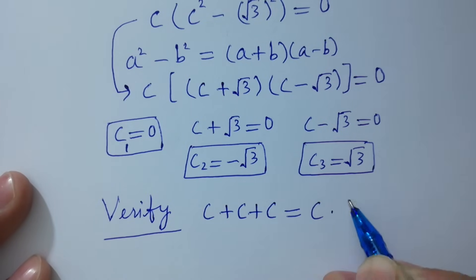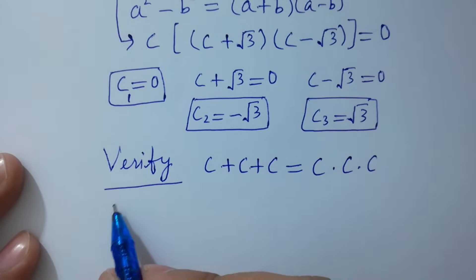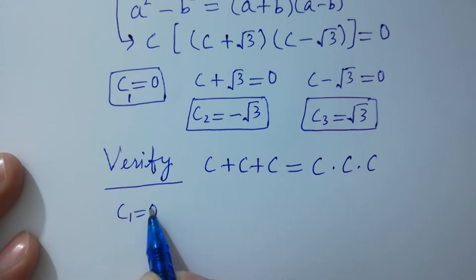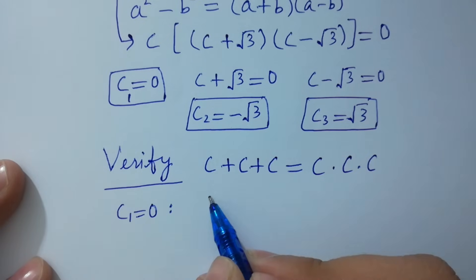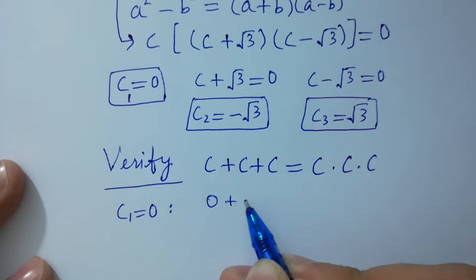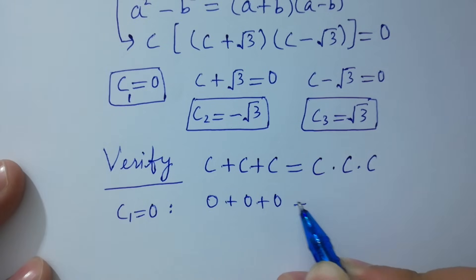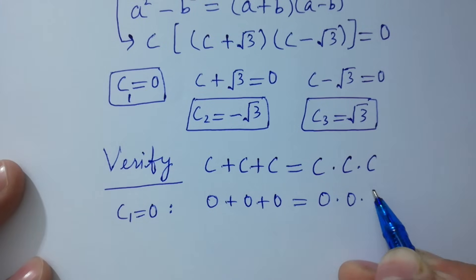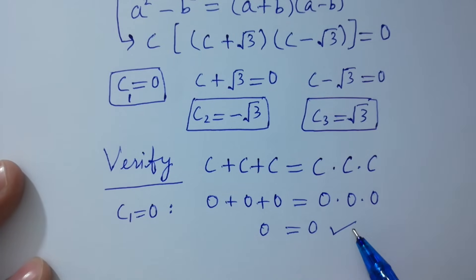Put c₁ equal to 0: 0 plus 0 plus 0 equals 0 times 0 times 0, giving 0 equal to 0, which is absolutely correct.